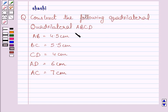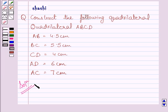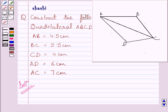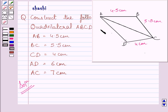We have to construct quadrilateral ABCD in which AB is equal to 4.5 cm, BC is equal to 5.5 cm, CD is equal to 4 cm, AD is equal to 6 cm, and AC is equal to 7 cm.